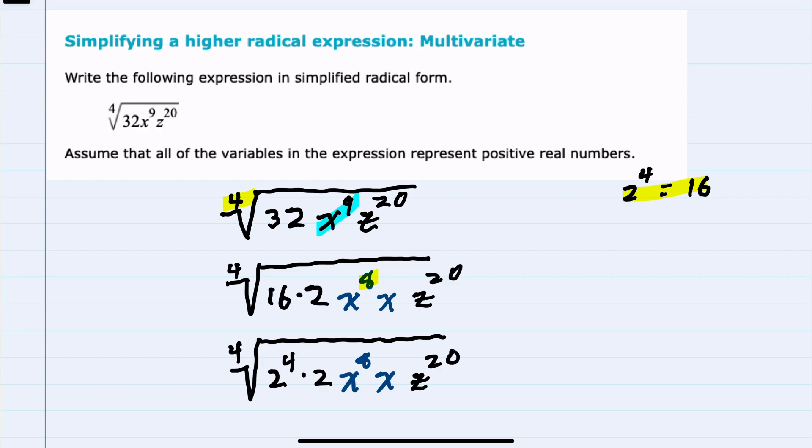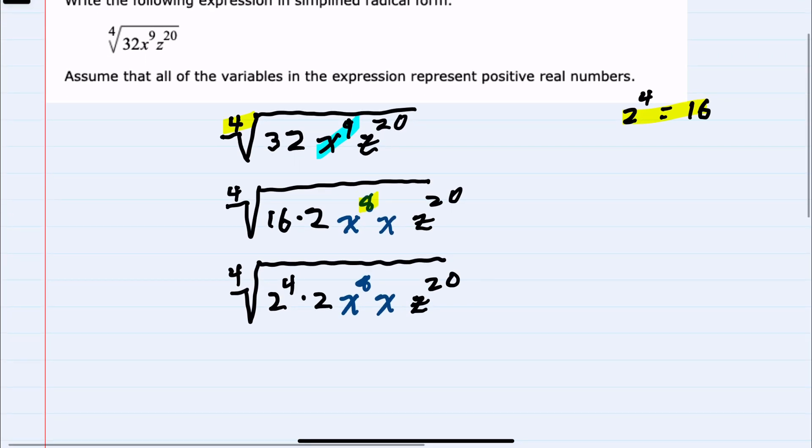And z to the 20. This is where we should recall that our fourth root is essentially everything inside that radical being raised to the one-fourth power. When we distribute that one-fourth power...